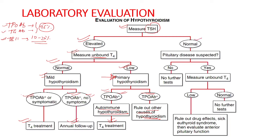If TSH is normal but there is strong suspicion of pituitary disease, free T4 levels are measured. If these are low, drug effects and sick euthyroid syndrome are ruled out, followed by evaluation of anterior pituitary function to rule out secondary hypothyroidism, which is very rare, seen in less than 1% of cases. If free T4 is also normal or pituitary disease is not suspected, no further tests are required.